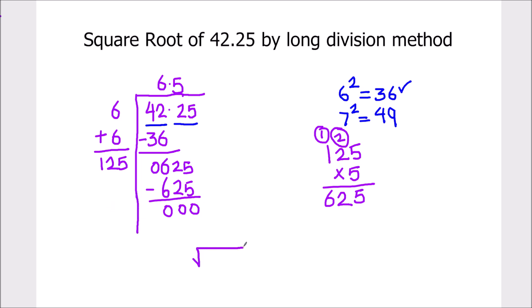Our final answer for the square root of 42.25 is 6.5. This is how we can find the square root of any number using long division method.